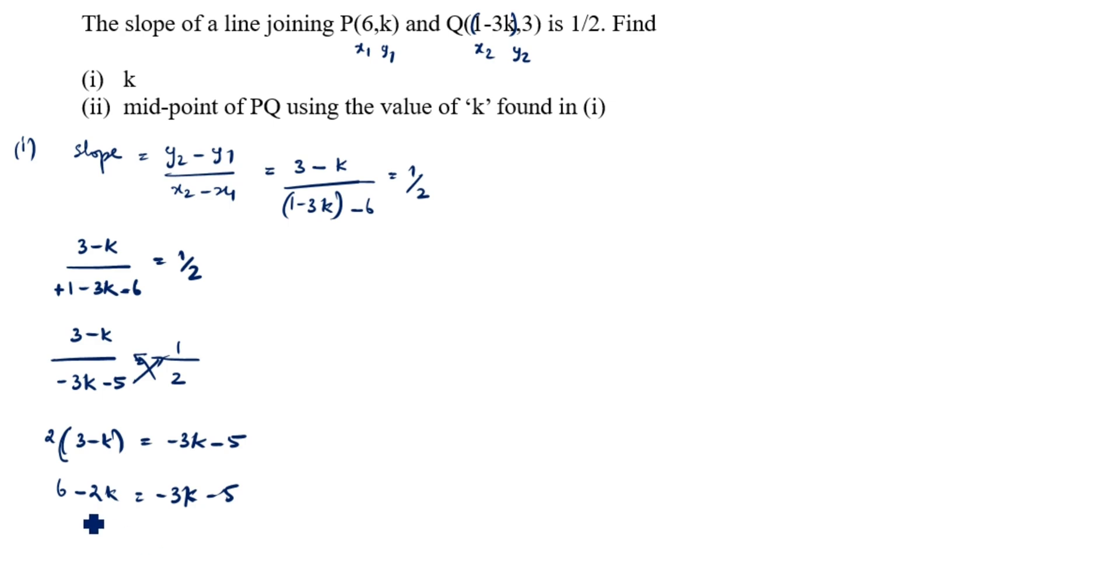Bring k to one side and numbers to another side. So -2k plus 3k is equal to -5 minus 6. -2k plus 3k is plus k. We will take plus k equal to -11. So what is the k value in this case? k is equal to -11.